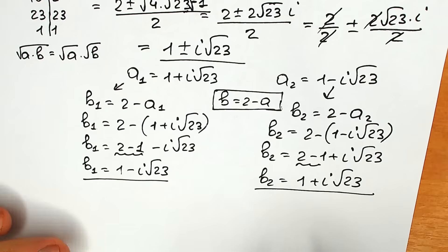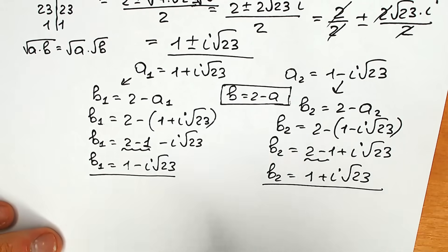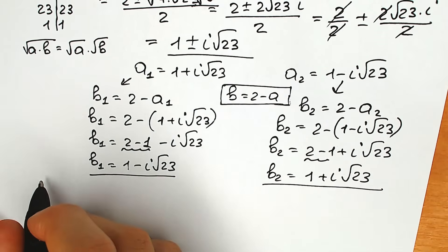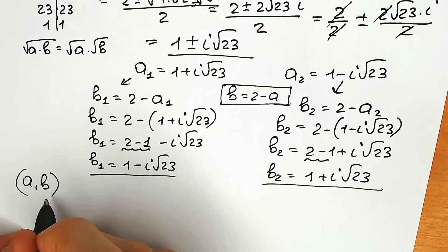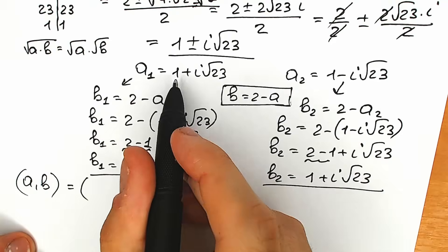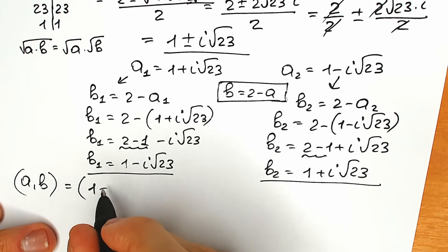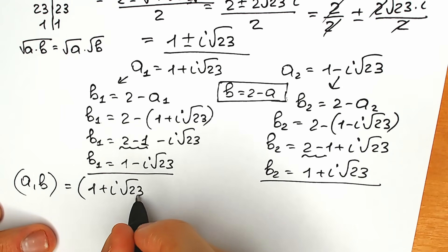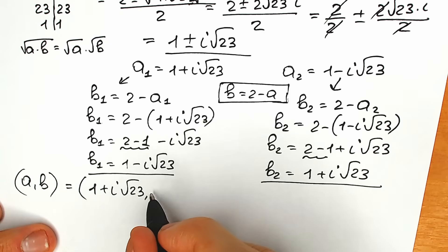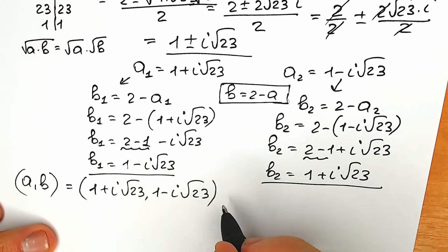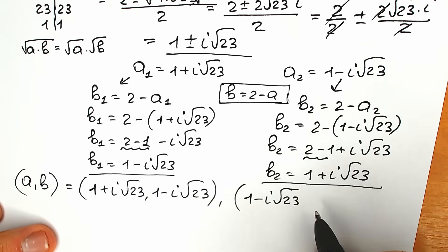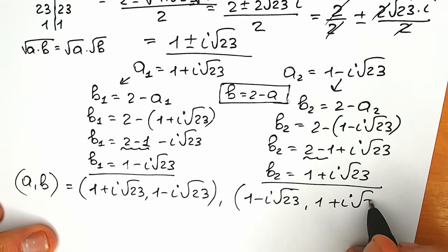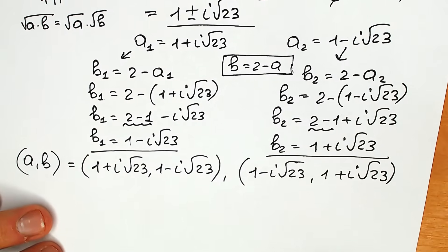So these are our two pairs of roots. Let's write the final answer. For the first pair: a₁ = 1 + i√23 and b₁ = 1 − i√23. For the second pair: a₂ = 1 − i√23 and b₂ = 1 + i√23. These are our solutions to this question.